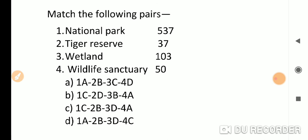Match the following: India has 103 national parks, 50 tiger reserves, 37 wetlands, and 537 wildlife sanctuaries. So the correct answer is option B.